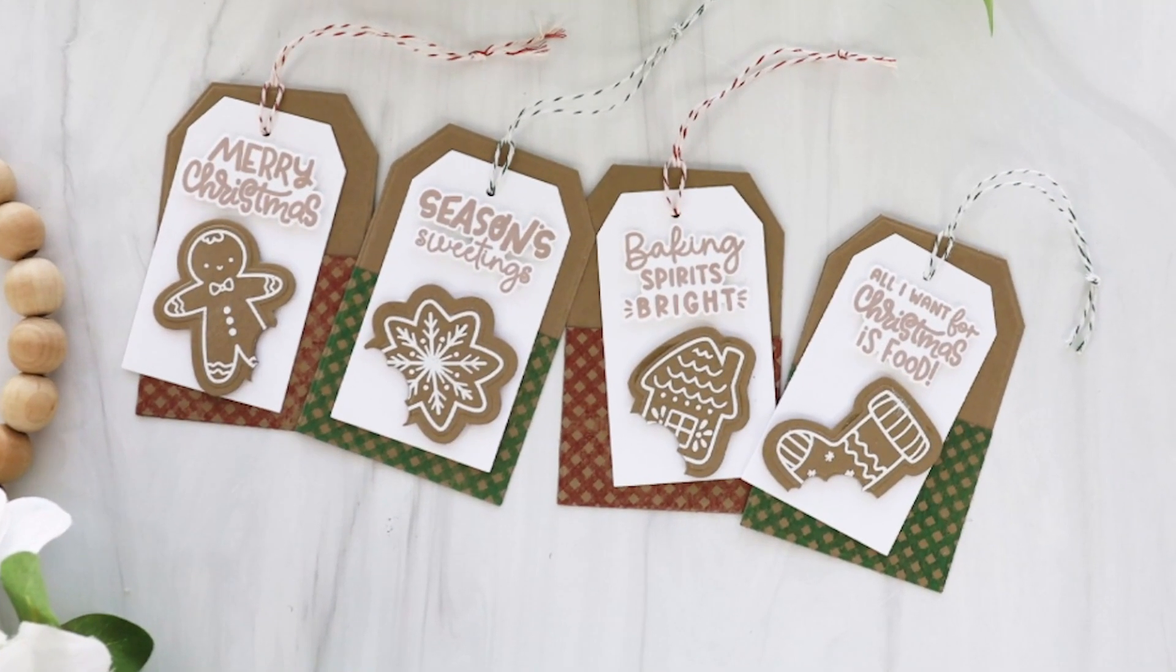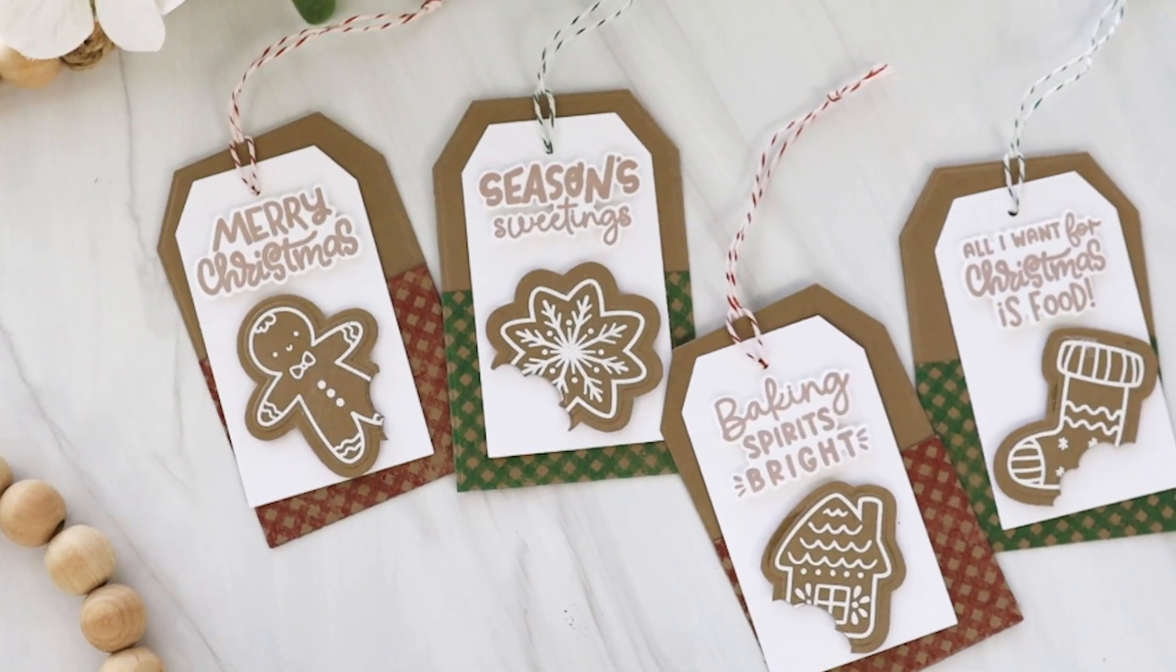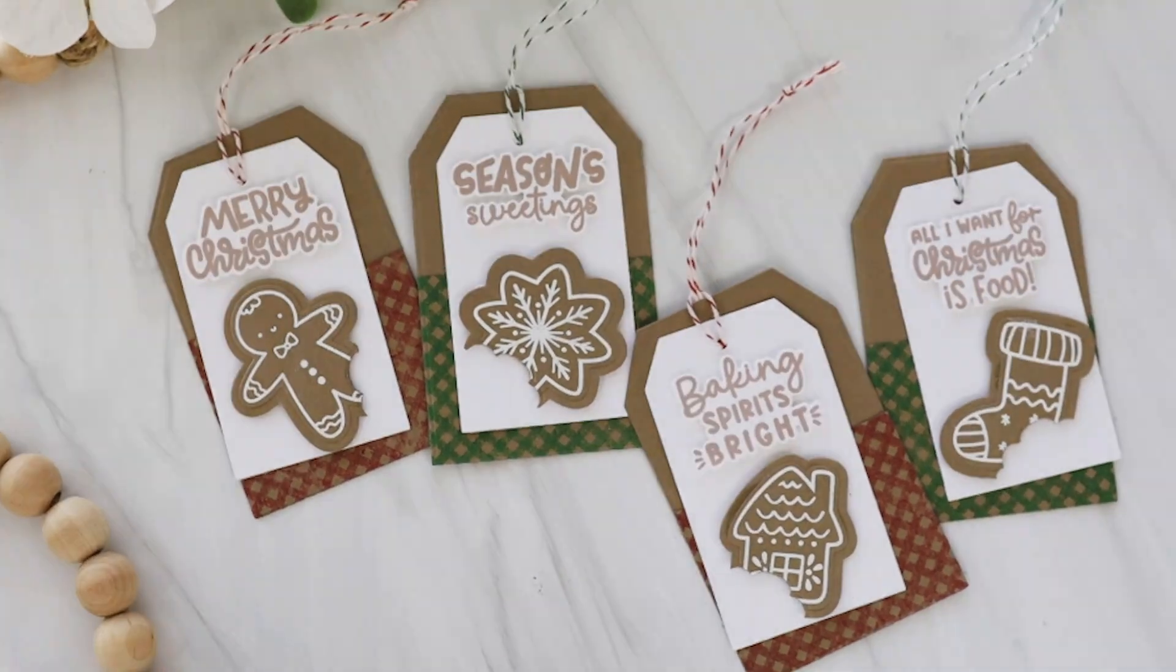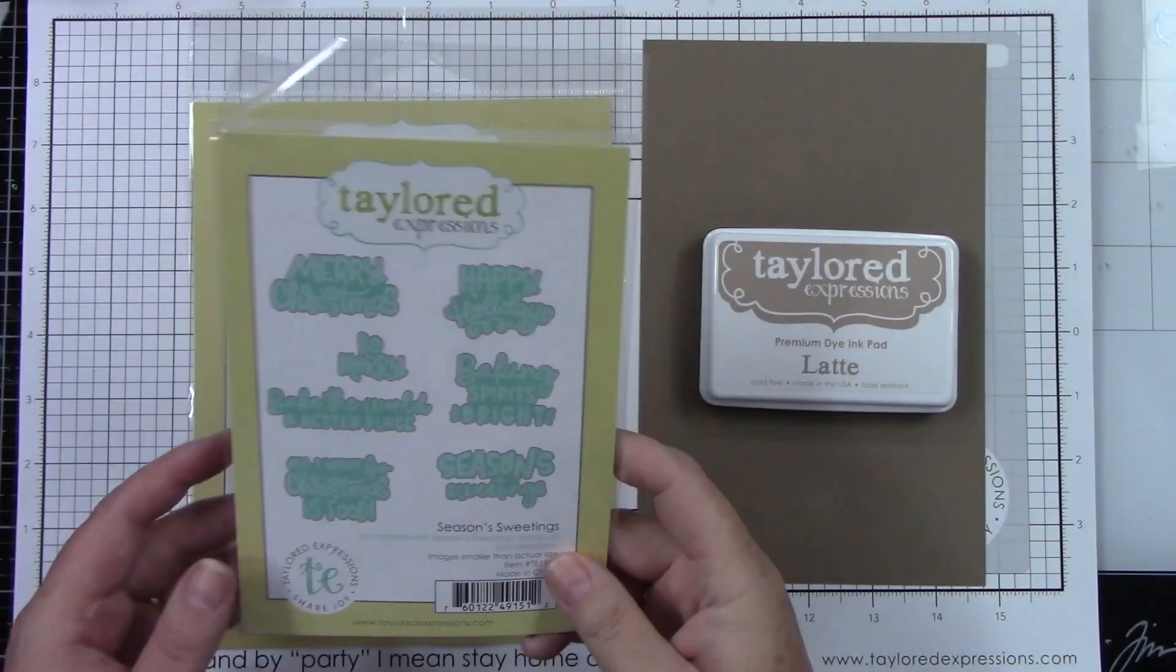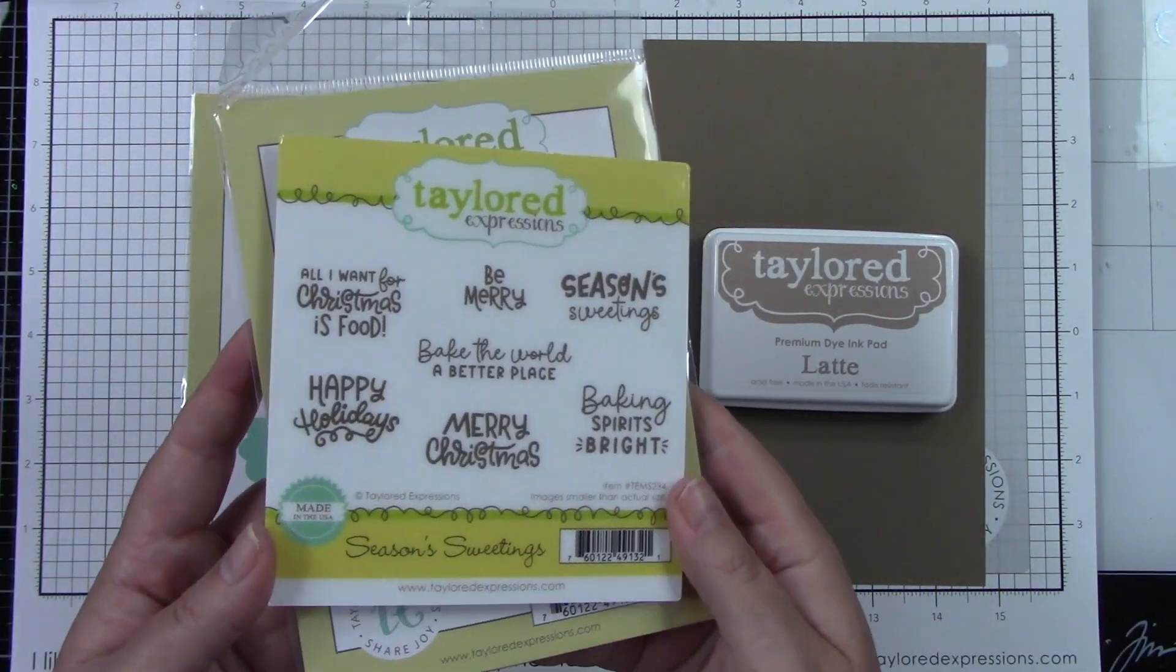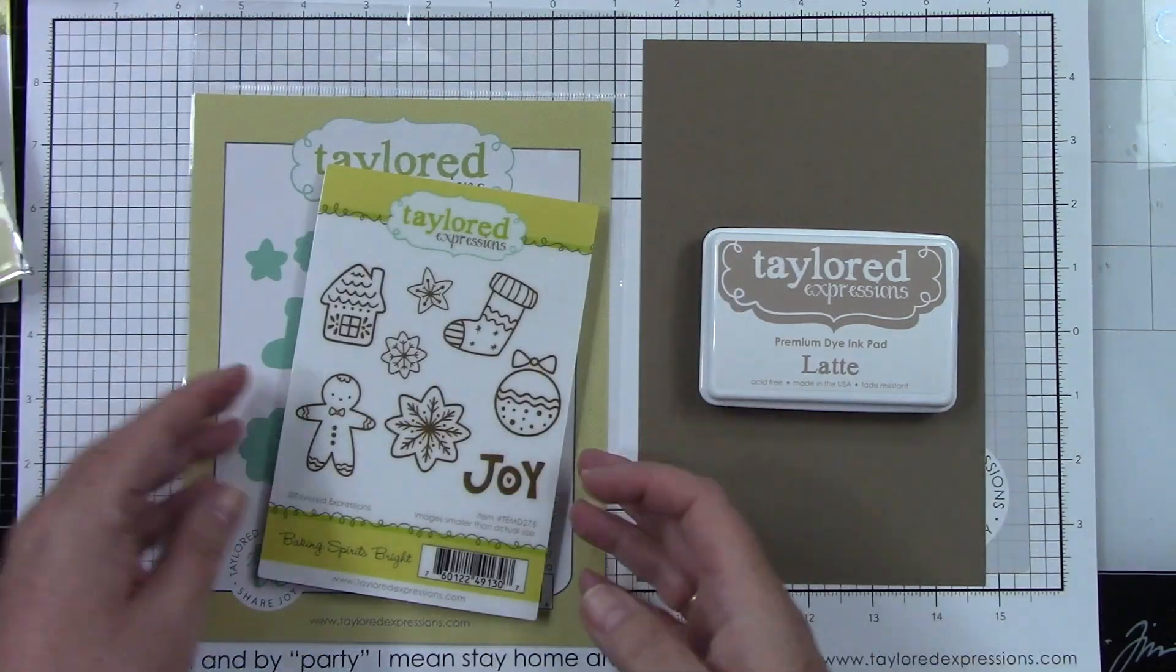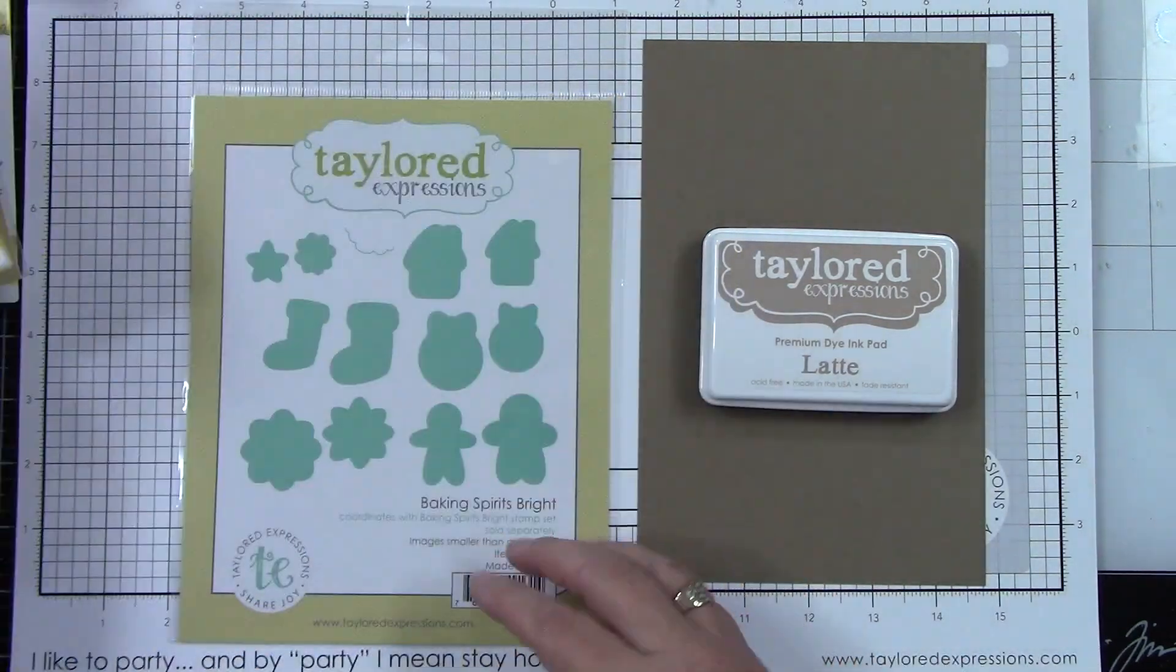Hey crafty friends, it's Joy here and I am super excited to share these fun tags that you can add to little treats to give at the holidays. I'm going to be using the Seasons Sweetings stamp and coordinating die with tons of cute sentiments. I'm also using the Baking Spirits Bright stamp and coordinating die.